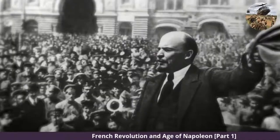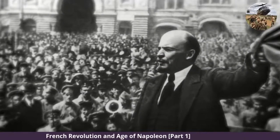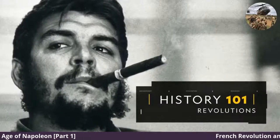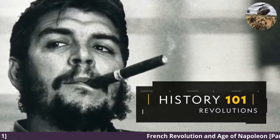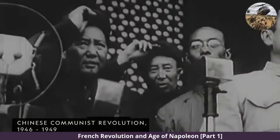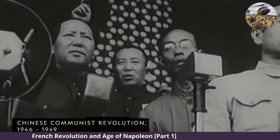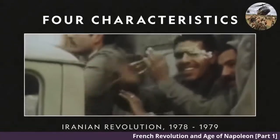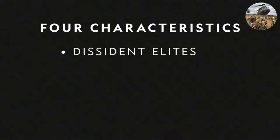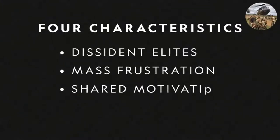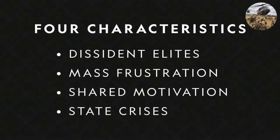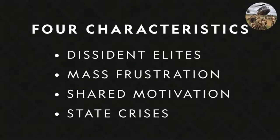Politics are a powerful and dynamic human creation, a truth most evident in revolutions around the world. A revolution, in a political sense, is a sudden and seismic shift from one form of government to another. While revolutions come in many forms, they often share four characteristics in varying degrees: dissident elites, mass frustration, shared motivation, and state crises. Altogether, these factors have ignited some of the most radical changes throughout history.